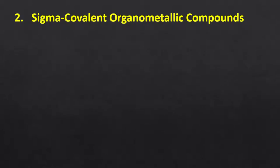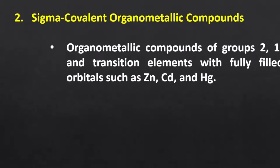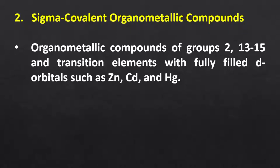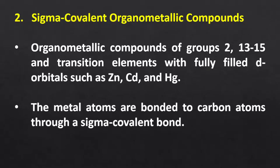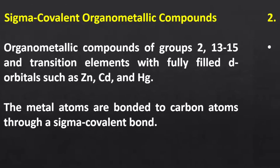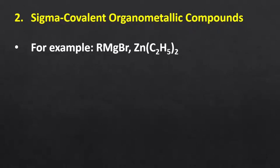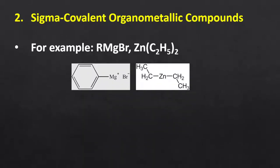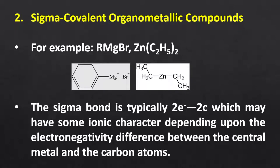The second type is sigma covalent organometallic compounds. The metallic elements of groups 2, 13, 14, and 15, as well as transition elements with fully filled d orbitals such as zinc, cadmium, and mercury, form organometallic compounds in which the metal atom is bonded to the carbon atom through a sigma covalent bond — for example, Grignard reagents, diethylzinc, tetraalkyl lead. The sigma covalent bond is a typical 2-electron 2-center bond and may have some ionic character depending on the electronegativity difference.